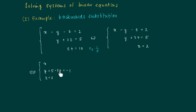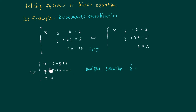Using z equals 2 in the second equation, we get y equals 5 minus 3z, which makes minus 1. Now we use both values z and y to obtain a value for x: x equals 2 plus y plus z, which makes 3.